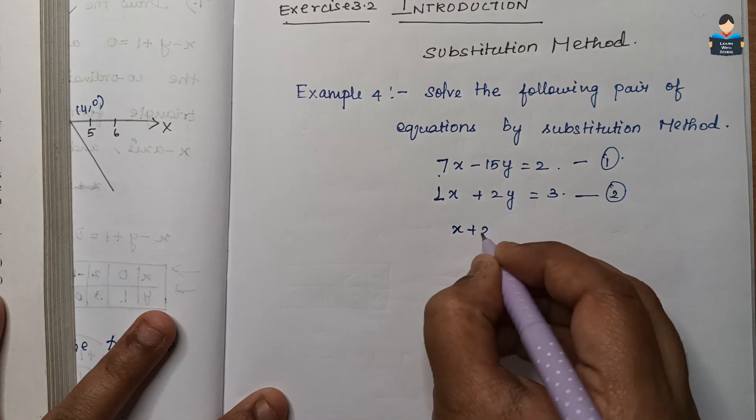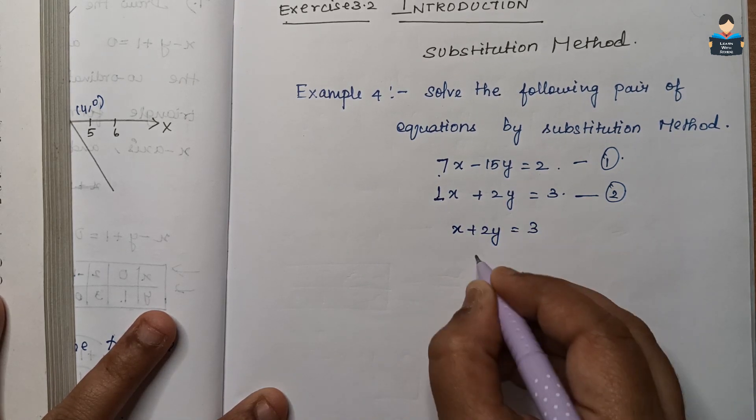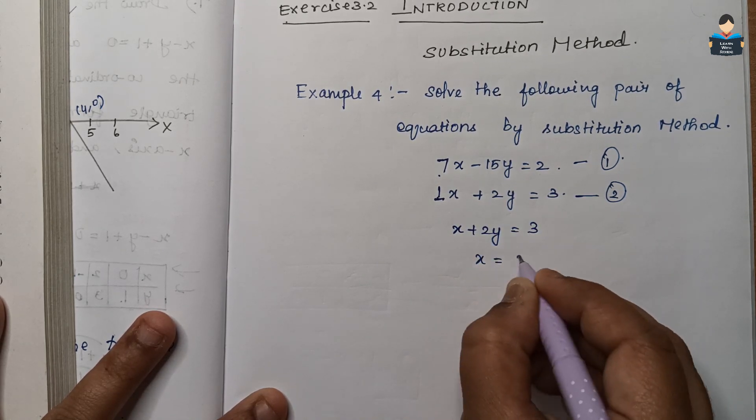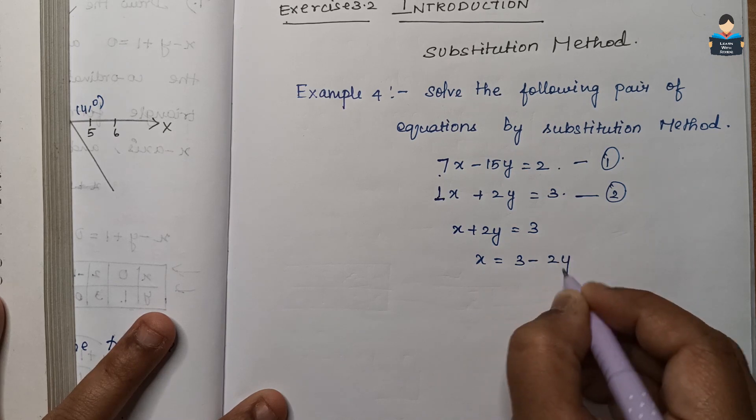From the second equation, x plus 2y equal to 3, we get x is equal to 3 minus 2y. This will be our equation 3, which we will substitute into the first equation.